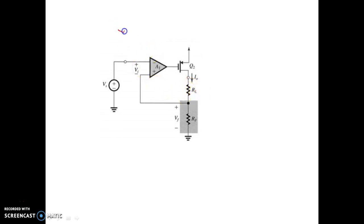First of all, to determine the feedback topology, we have to determine two things. One is for the output portion, we have to determine the sampling network, and for the input portion, we have to determine the mixing network.